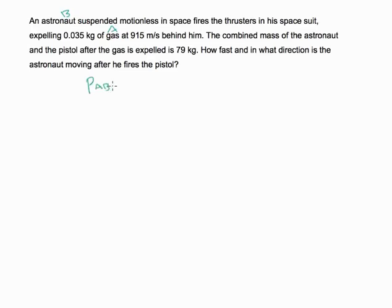So the original momentum is equal to the momentum of the gas after and the momentum of the astronaut after. We aren't given the mass of object AB, though we could just find it 79 plus 0.035, but we also don't need it because we know that the velocity is zero when they're together because they're motionless. So that means PAB1 is equal to zero.